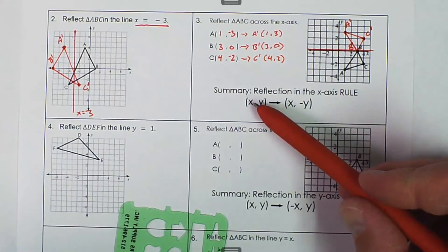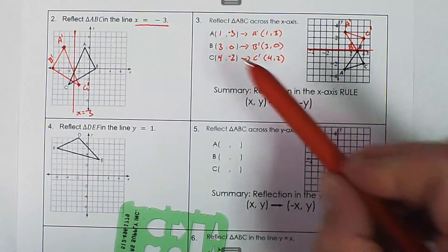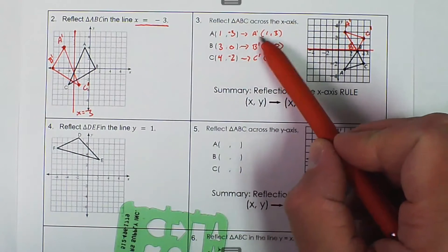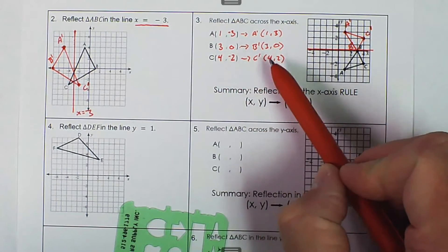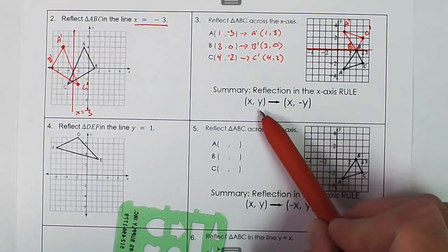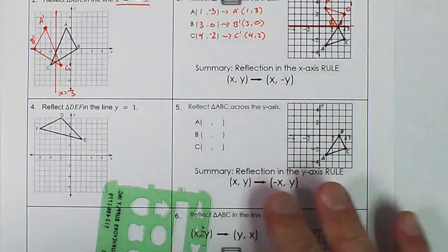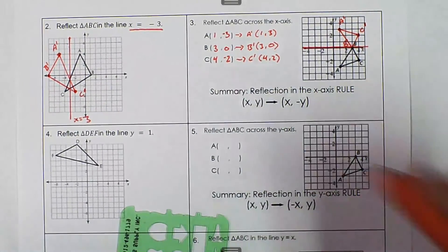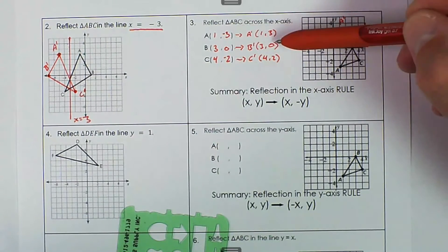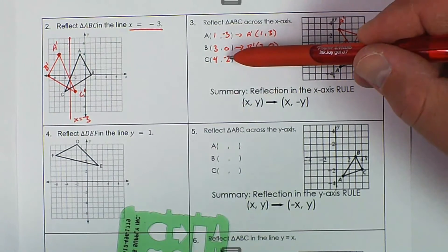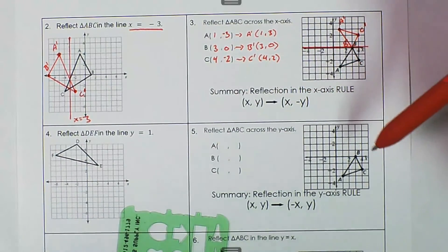Looking at the summary: reflection over the x-axis — the x values don't change. A is 1, A prime is 1; B is 3, B prime is 3; C is 4, C prime is 4. The y value becomes the negative of what it was before: negative 3 becomes positive 3, zero times negative one is still zero, and negative 2 times negative one is 2. That's the reflection rule over the x-axis.